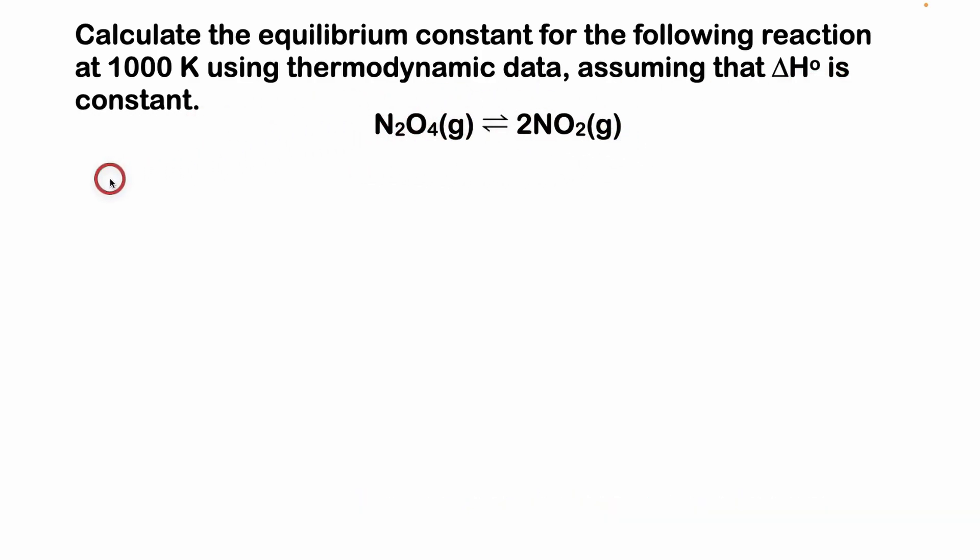Now we're going to use the van't Hoff equation in its integrated form, which is right here, and we want to solve for the equilibrium constant. But we don't have too much else. We're going to get that from the data. So we're going to start off by solving for the equilibrium constant K using this equation: the change in standard Gibbs energy of the reaction equals negative RT ln K.